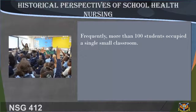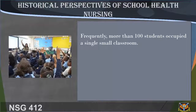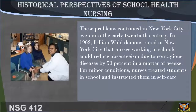Frequently more than 100 students occupied a single small classroom. Classrooms lacked ventilation and fresh air, a problem exacerbated by using stoves for heating and gas lights for illumination. These problems continued in New York City even into the early 20th century.